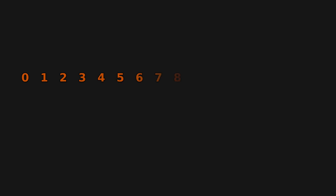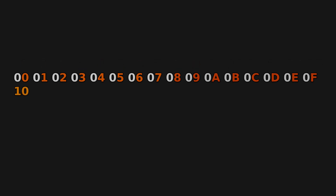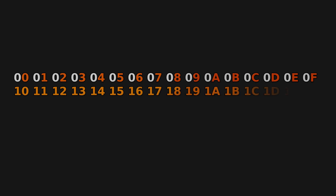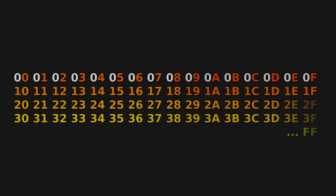In hexadecimal though, the digit range doesn't stop at 9. It extends past 9 with the letters A, B, C, D, E, and F, which represent the values we know in decimal as 10, 11, 12, 13, 14, and 15. It then becomes 10, which represents 16. The counting begins again, going up to 1F, and then becomes 20, which is 32, and so on until FF.